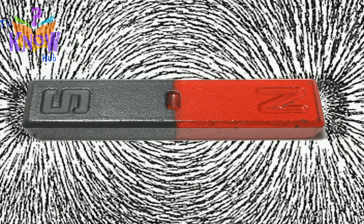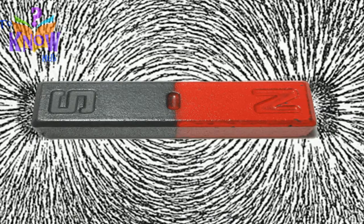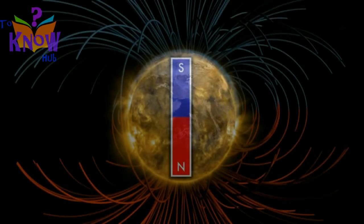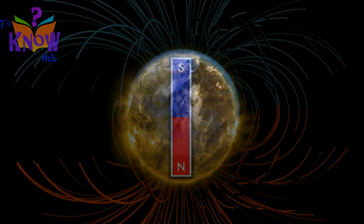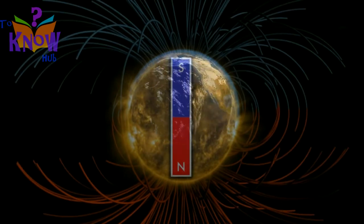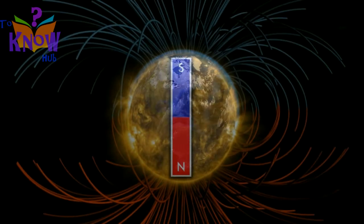See, the biggest portion of the powder got attracted towards the pole. Those are actually representing magnetic field lines. The region surrounding a magnet within which its magnetic force acts is said to have a magnetic field. This is our Earth's magnetic field. Our Earth is a huge magnet.